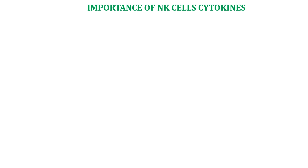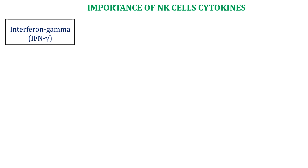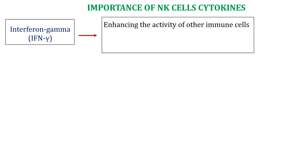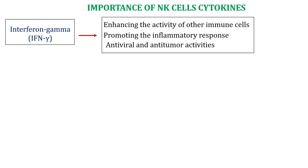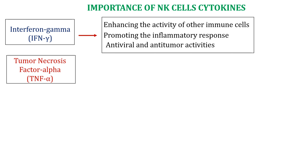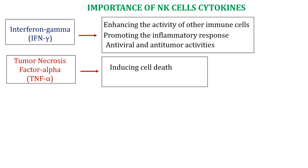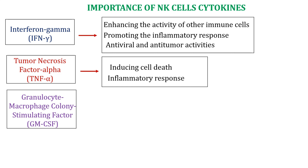NK cells respond to conventional antigens by secreting cytokines that alter the immune response. The first important cytokine released by NK cells is interferon gamma, which has several important functions including enhancing the activity of other immune cells, promoting the inflammatory response, and contributing to the antitumor activities of the immune system. The second cytokine is tumor necrosis factor alpha, which plays a role in inducing apoptosis in certain target cells, particularly tumor cells, and also contributes to the inflammatory response.